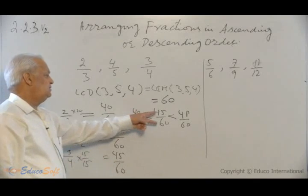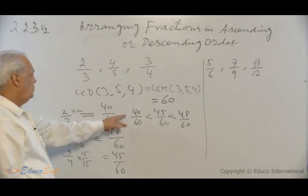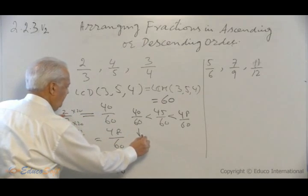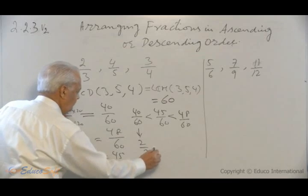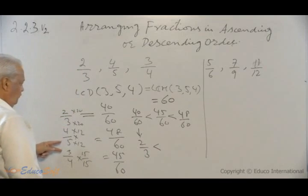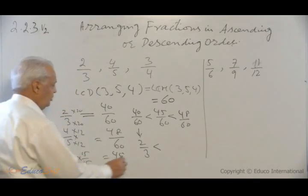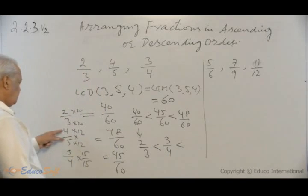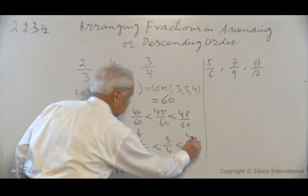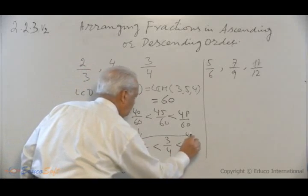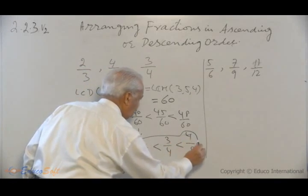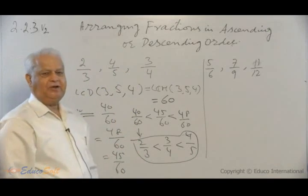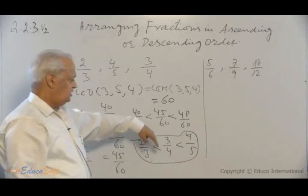Now write these original values of these fractions. They were what? 40 over 60 was equivalent to 2 over 3. 45 over 60 is equivalent to 3 over 4. And 48 over 60 is equivalent to 4 over 5. So this is the final answer of arranging these three fractions in ascending order. The smallest first and then so on.